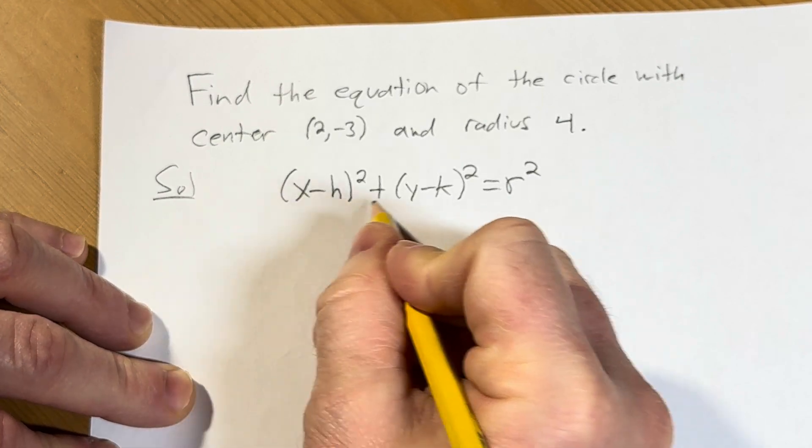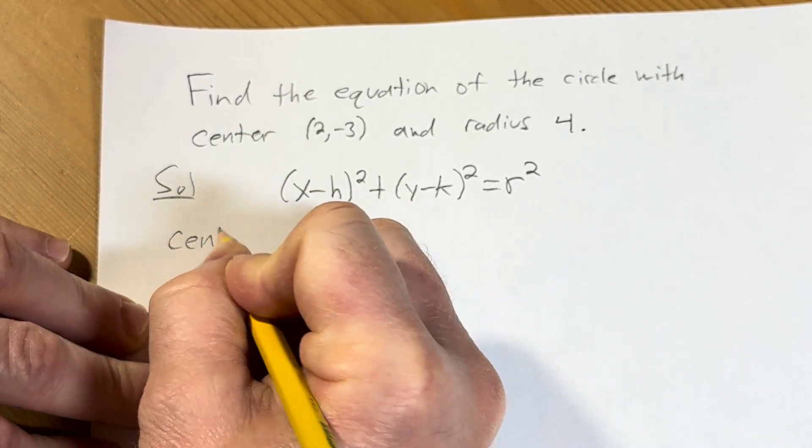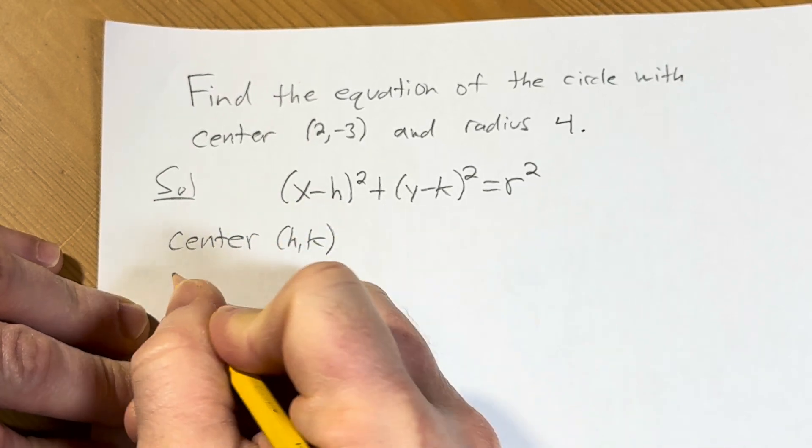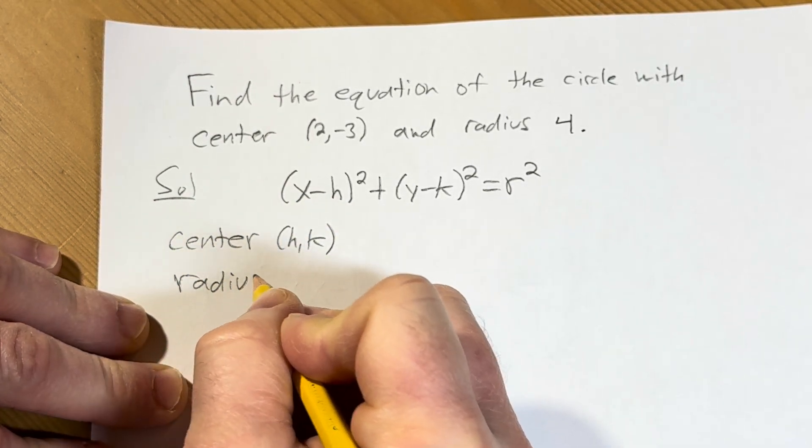In this formula the center is the ordered pair (h, k). So in this case the center is (h, k) and the radius is going to be r.